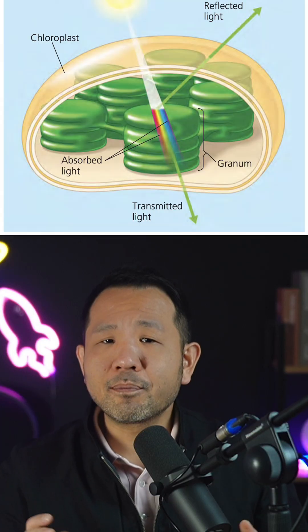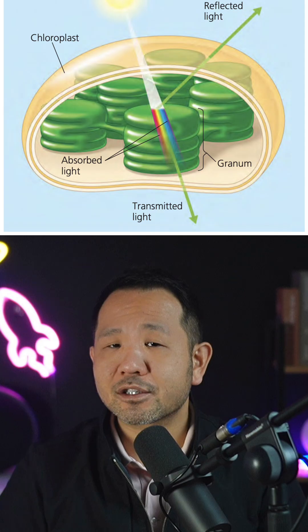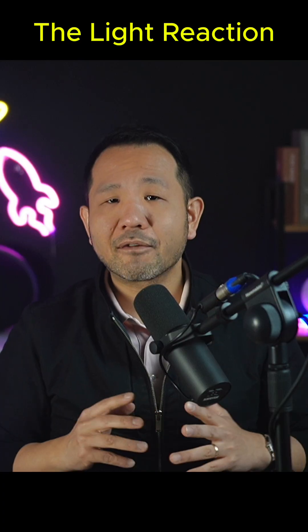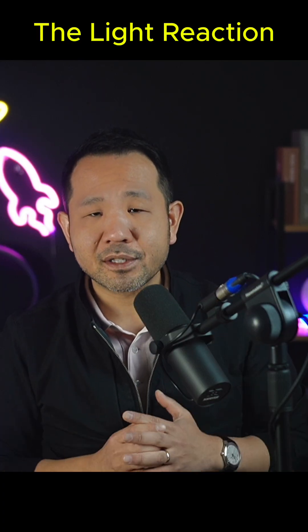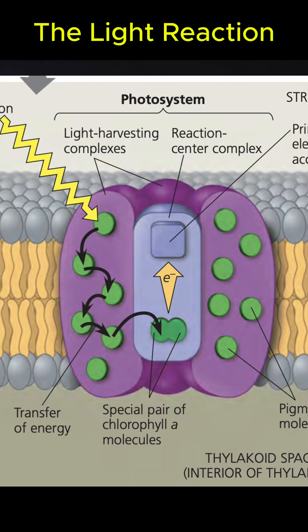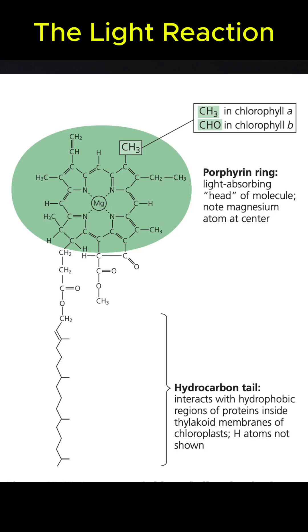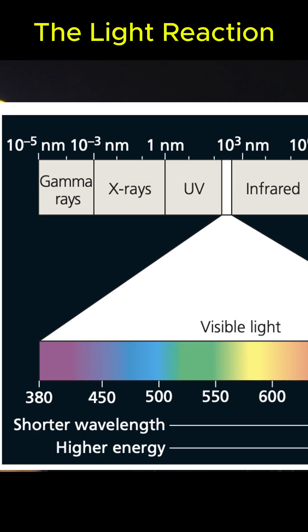In the thylakoid membranes of plant chloroplasts, we have these amazing proteins called photosystems. They house chlorophyll pigments which can absorb light of various wavelengths.